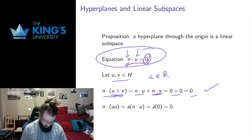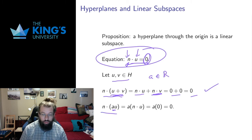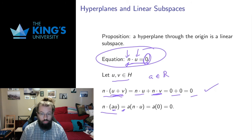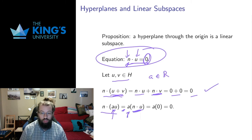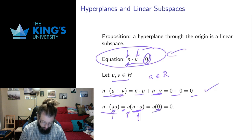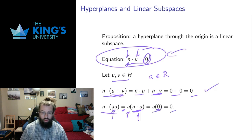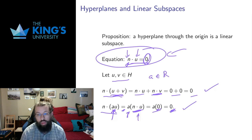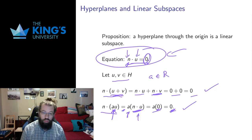What about scalar multiplication? Take a multiple AU of something U in the hyperplane, and check if it satisfies n dot (AU) = 0. The properties of the dot product say I can pull constants out front, so n dot (AU) equals A times (n dot U). Since U is in the hyperplane it satisfies the equation, so n dot U equals zero, giving A times zero, which is zero. So AU also satisfies the equation and is in the hyperplane. This allows me to conclude the hyperplane is in fact a linear subspace — this geometric object satisfies the algebraic condition that the sum of any two vectors on it remains on it, and any scalar multiple of a vector on it remains on it.